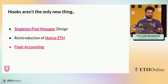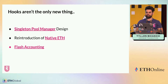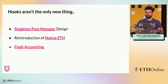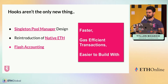Hooks aren't the only new thing here. We've added so many new things to Uniswap v4 that you probably won't recognize — it's not the same as v3. We've moved to a singleton pool manager design, we've reintroduced native ETH, and we have flash accounting. All of this is meant to make Uniswap faster, more gas efficient, and easier and more fun to build with for developers.